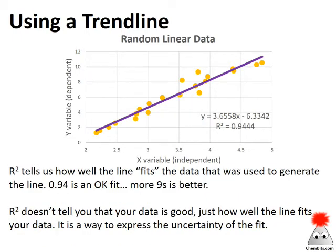So r squared is both a blessing and a curse. So r squared tells us how well this line fits the data that we used to generate that line. And you know, a perfect r squared would be 1.00000.